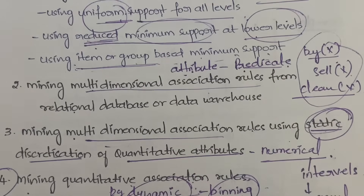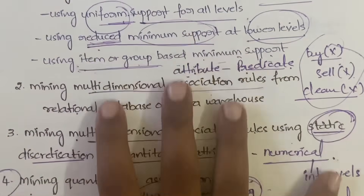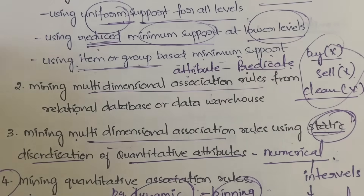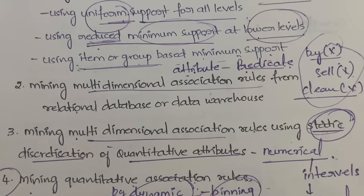For multi-dimensional, the first case is for relational databases or data warehouses; the second is for quantitative attributes using static discretization; the third is quantitative using dynamic discretization. So totally we have four types to remember. In the next video I'll be explaining about correlation analysis. Thanks for watching — if you have any doubts, let me know in the comment section.